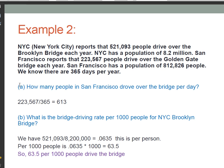The first question says, how many people in San Francisco drove over the bridge per day? All right, so first we better find San Francisco. That's right here. And this is the number of people in San Francisco that drove over their Golden Gate Bridge. And that's per year. And we want per day. So we're going to take that number and we're going to divide it by 365. And that gives us around 613 people per day. That's the rate. So that's that first question. Notice we only needed to use this value to answer that first question.